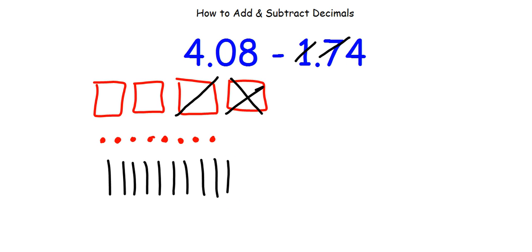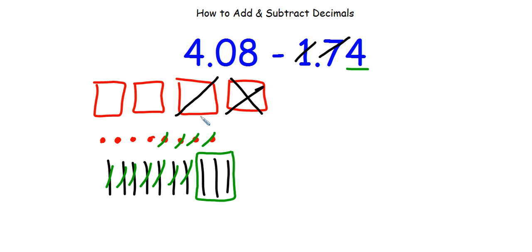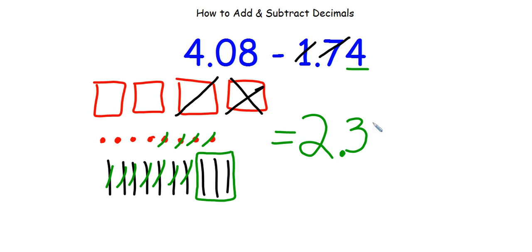I take away 7 of those rods: 1, 2, 3, 4, 5, 6, 7. I'm left with just 3 rods. Now I take away 4 hundredths — 4 dots: 1, 2, 3, 4. To get my answer, I count what's left. I have 1, 2 wholes. Then my rods: 1, 2, 3 of them. And 1, 2, 3, 4 dots — 4 hundredths. So the answer is 2 and 34 hundredths.